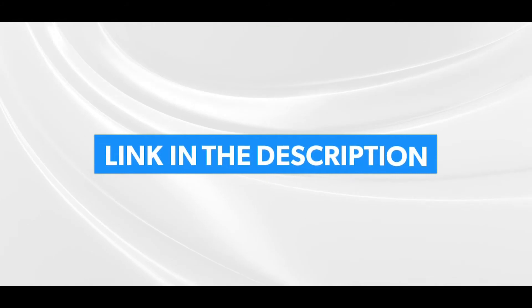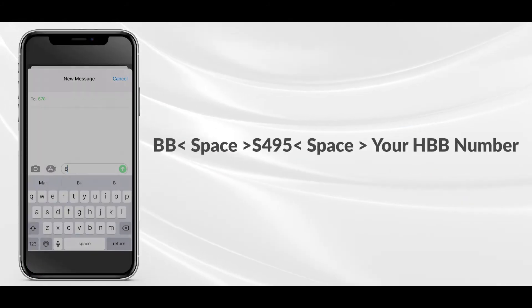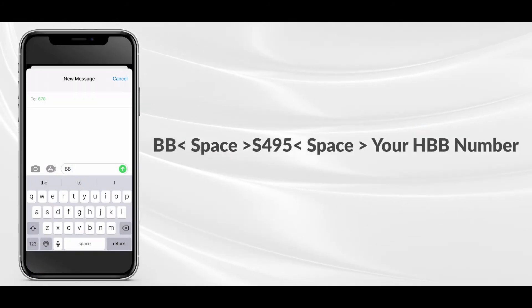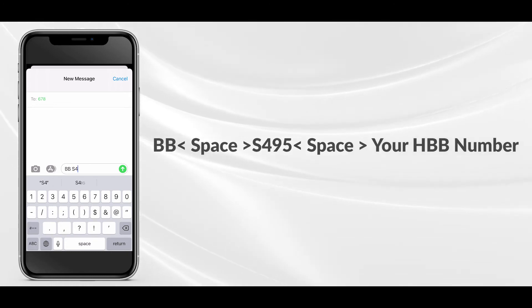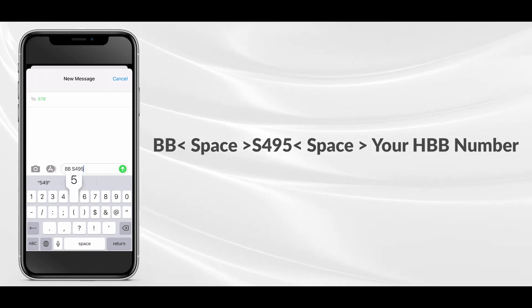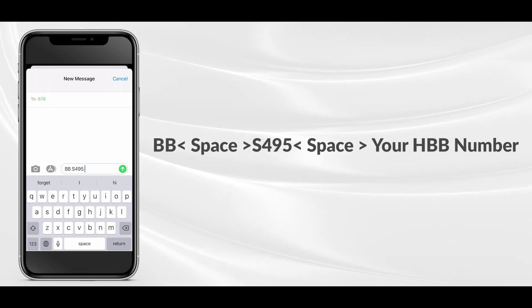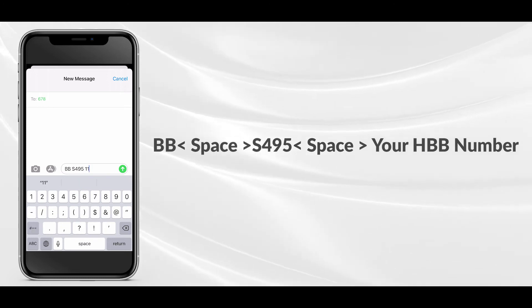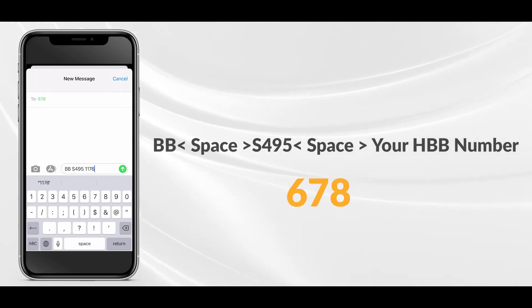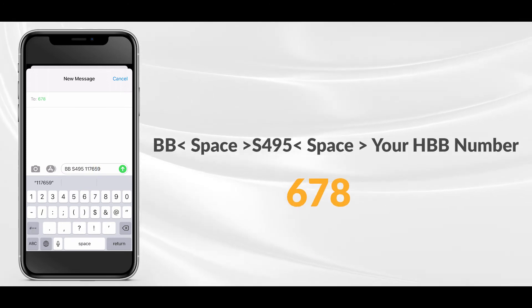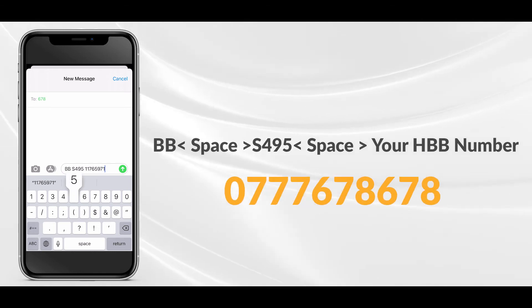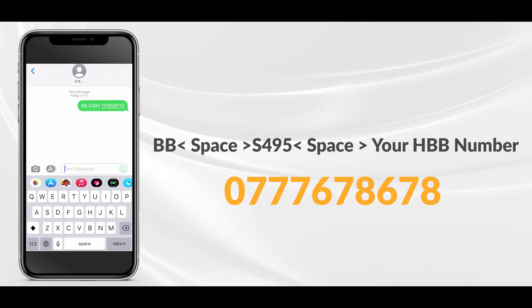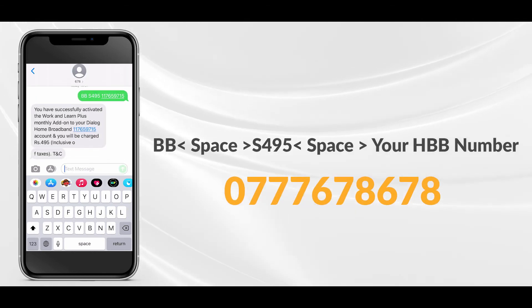To activate the 35 GB Anytime Data Recurrent Pack, if you are using a Dialog number, type BB S495 followed by your HBB number and SMS to 678. If you are using any other mobile network, SMS to 0777 678 678. You can also activate this package by visiting hbb.dialog.lk.